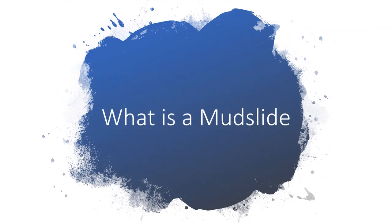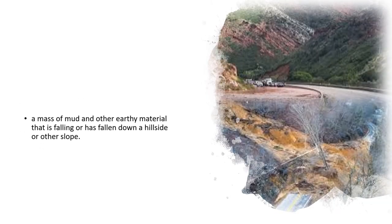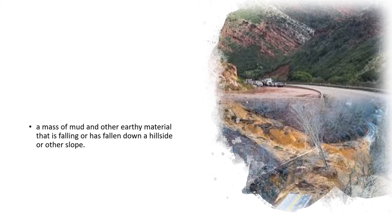What is a mudslide? A mudslide is a mass of mud or other earthly material that falls down a hillside or slope. This is a picture of a road before a mudslide, and this is after. There's no destruction here, but more than 50% of the road is covered, so they'll need to do a lot of work to clear it.